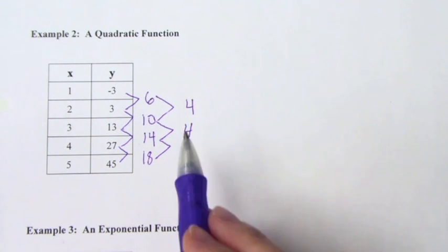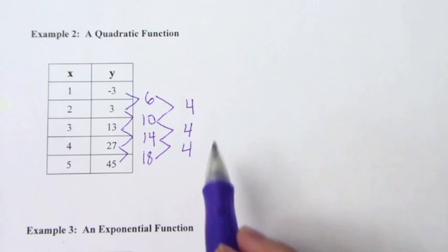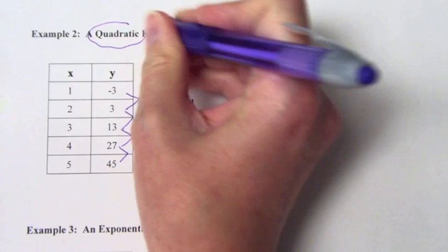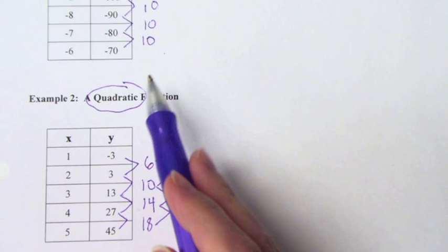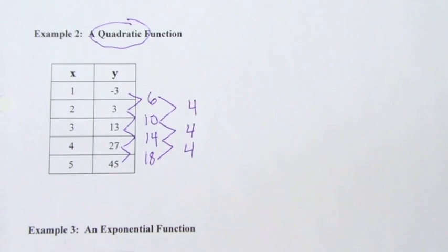So since the difference of the difference is the same, that's how we know it's quadratic. That's what will happen on a quadratic. So do you see the difference? Linear, it happens the first time you do it. Quadratic, it happens the second time you do it. And that's how you know it's quadratic.